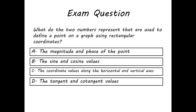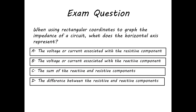Second question: what do the two numbers represent that are used to define a point on a graph or chart using rectangular coordinates? Third question: when using rectangular coordinates to graph the impedance of a circuit, what does the horizontal axis represent? The impedances along the horizontal axis are resistive.